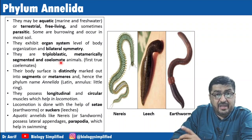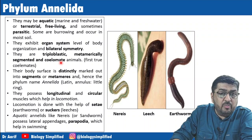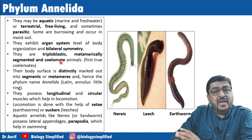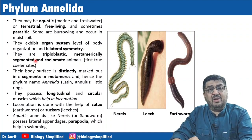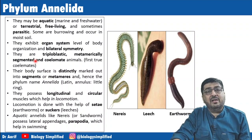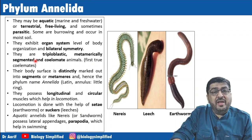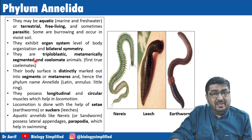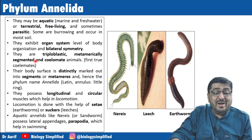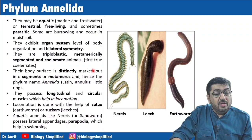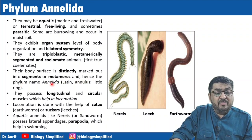In the previous session we highlighted that Aschelminthes was the only pseudocoelomate of the entire kingdom. So from Annelida onwards, they are all coelomates. Metamerically segmented — when the outer segmentation and inner segmentation coincide with one another, it is called metamerically segmented, otherwise it is only segmented. Their body surface is distinctly marked out into segments or metameres. Hence the phylum name is Annelida, meaning ring.